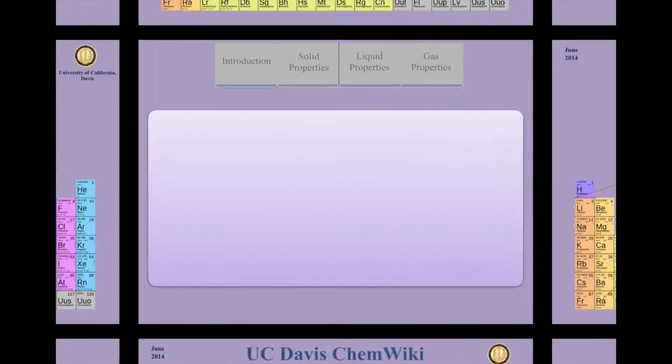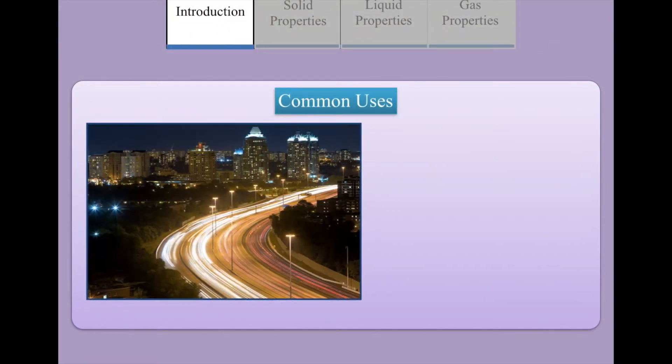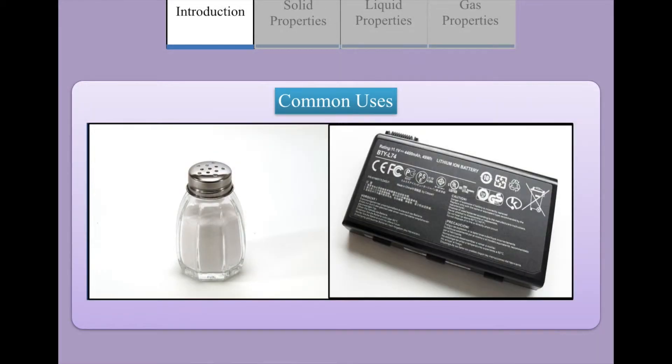The group 1 elements, otherwise known as the alkali metals, are most commonly found in sodium vapor lamps, atomic clocks, table salt, and lithium batteries.